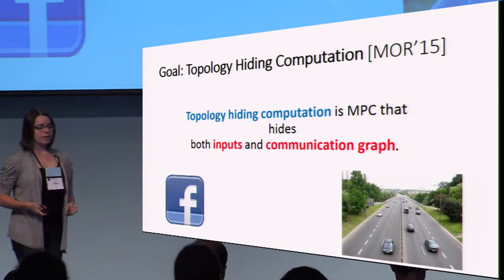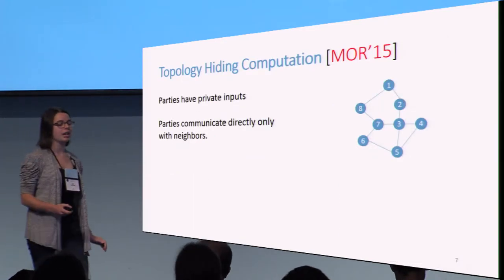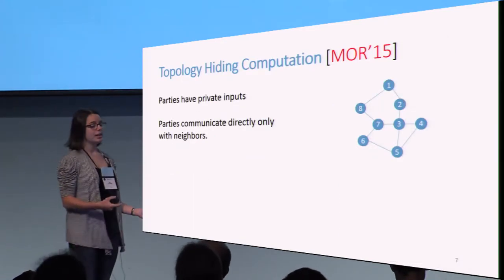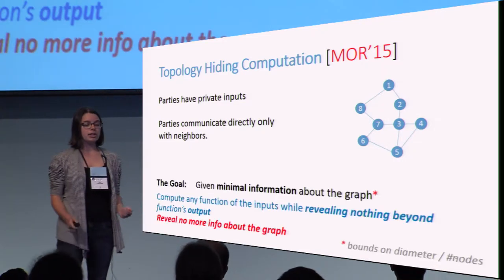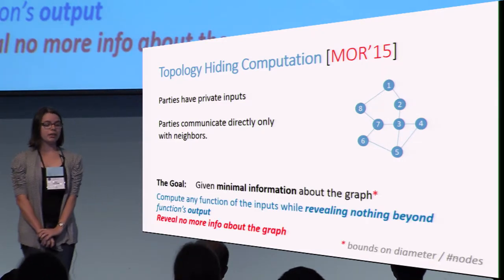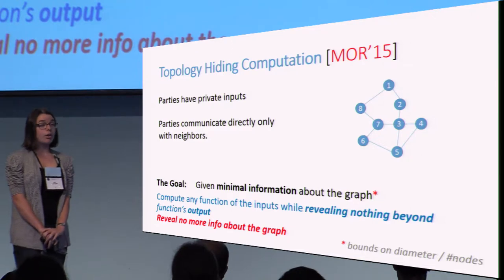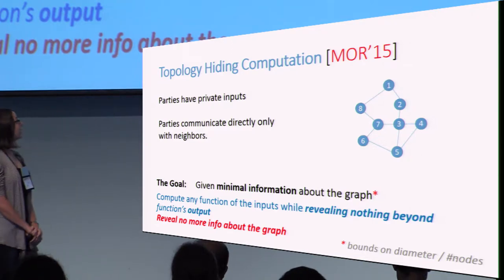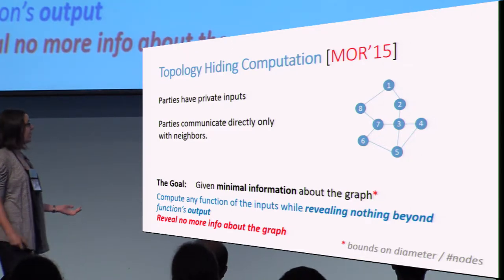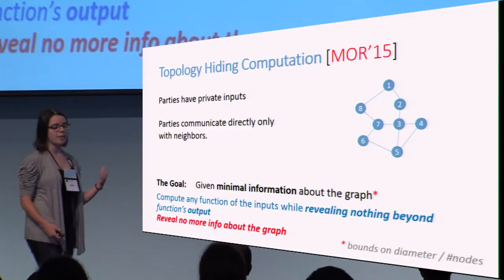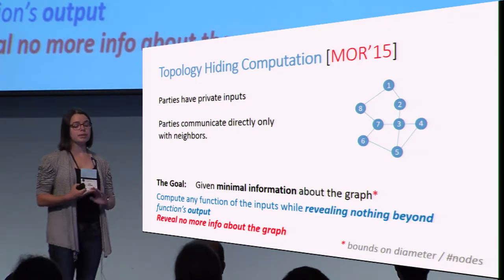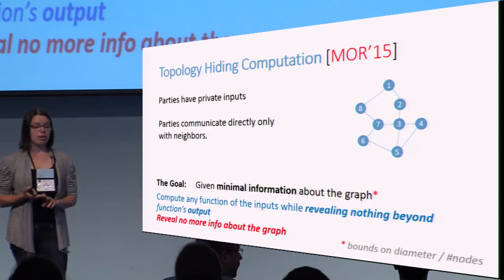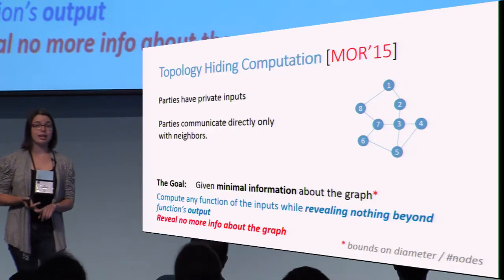More formally, the setting for topology hiding computation: each party has their own input for a function, and parties can communicate directly only with their neighbors. Our goal will be, given minimal information about the graph — maybe a bound on the diameter of the graph or the number of nodes — to be able to compute any function on the inputs while revealing nothing beyond the output.